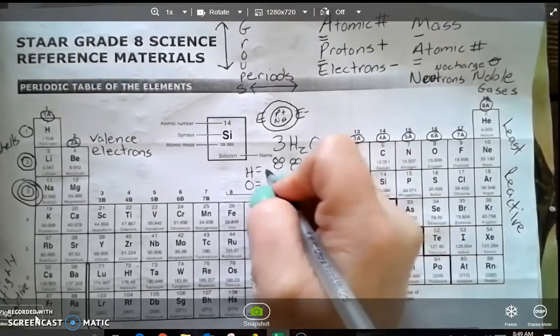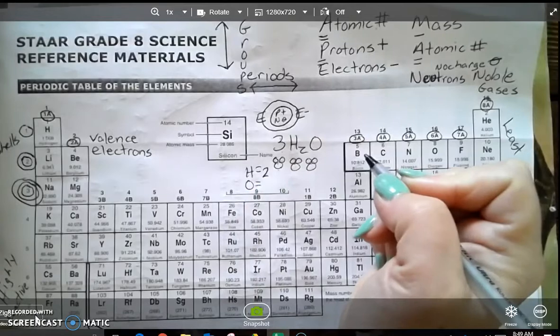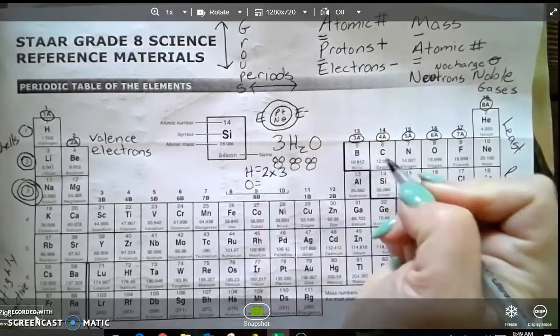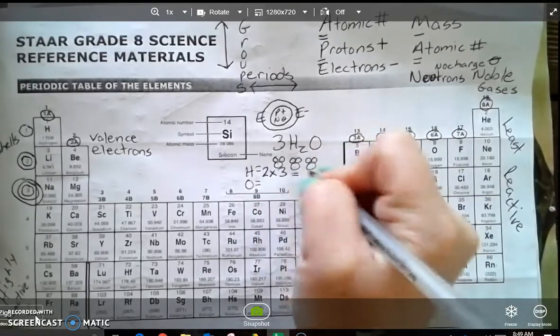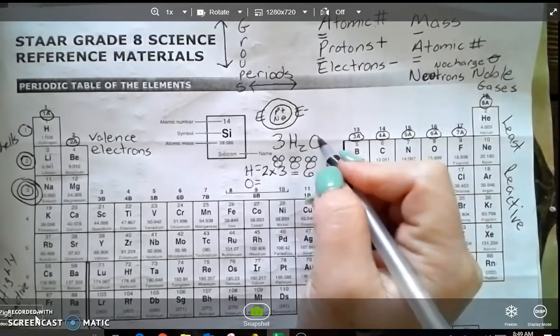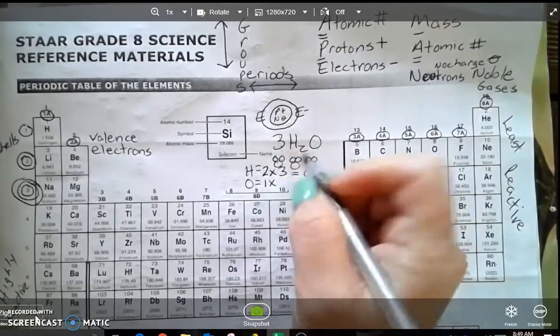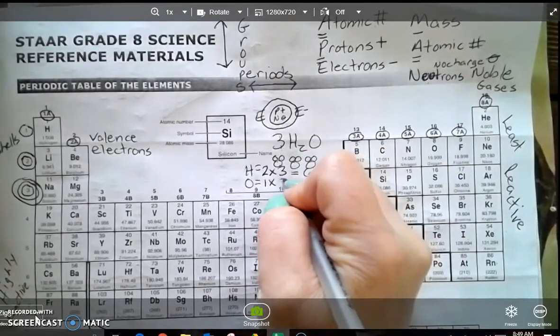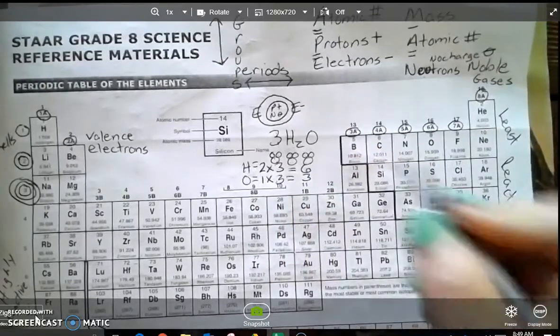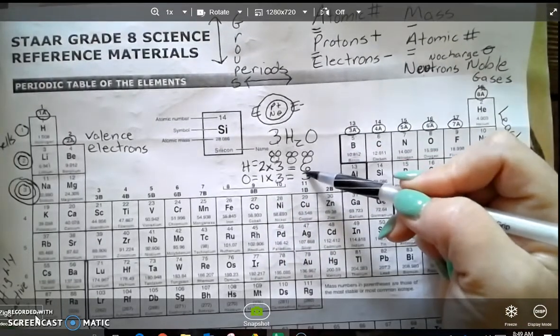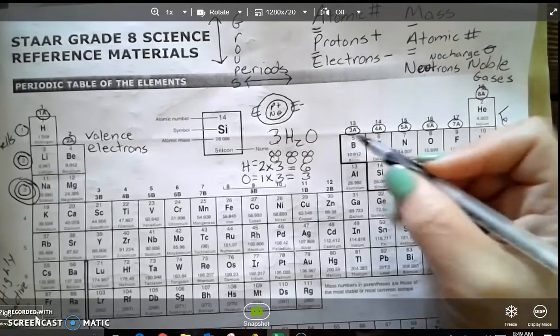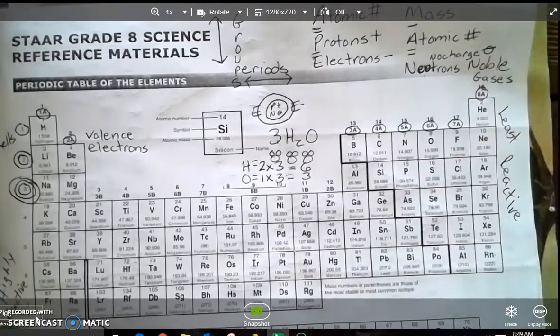So if I have two hydrogen per water molecule and I have three of those water molecules, I'll multiply. So two times three equals six. And if I have one per molecule, I will have one again times that coefficient of three, which will equal one times three is three. So I will have six hydrogen, three oxygen with a total of nine atoms for that formula 3H2O.